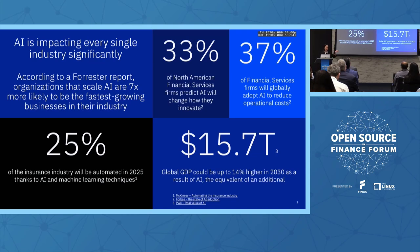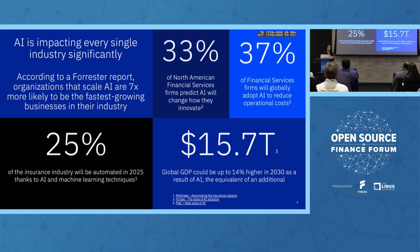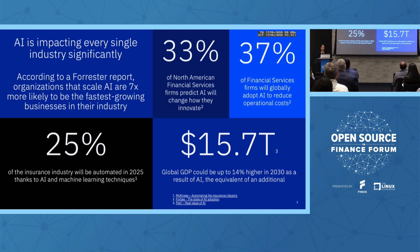Behind those numbers, those are actually the areas where AI can help us. AI can help us reduce operational cost, improve employee efficiency, solve high-volume transactions, and gain more insights to make better decisions and drive revenues. Those are the typical areas where AI is being used today.